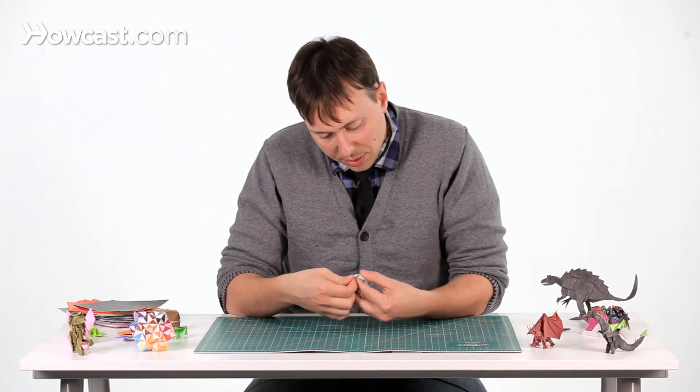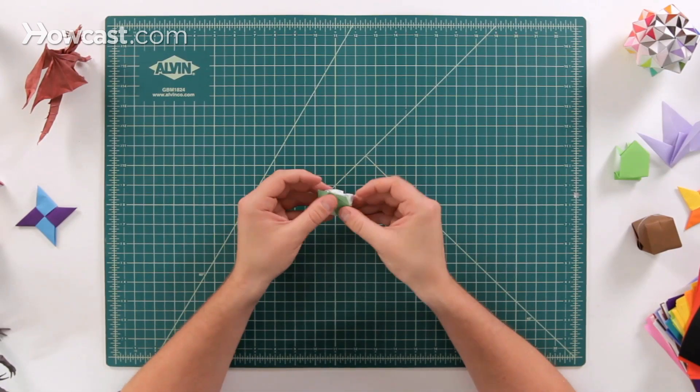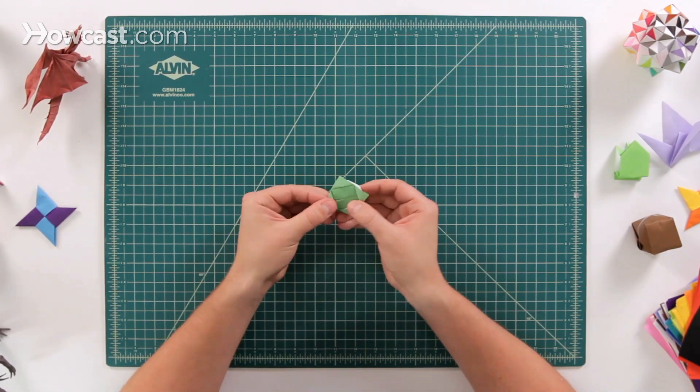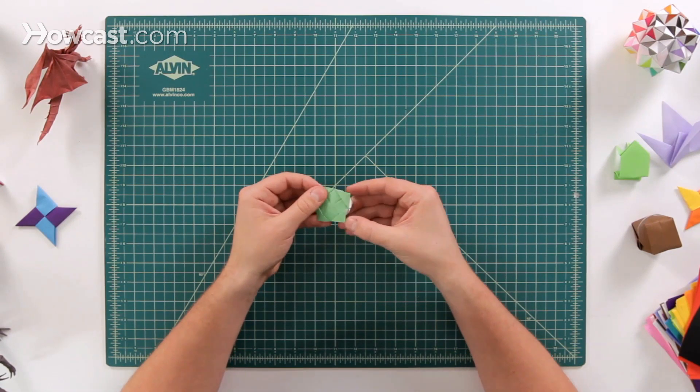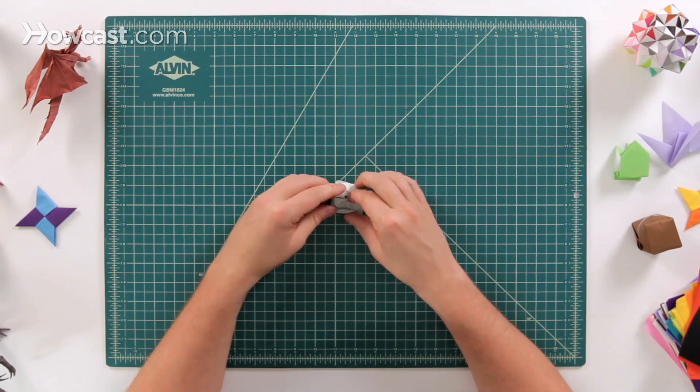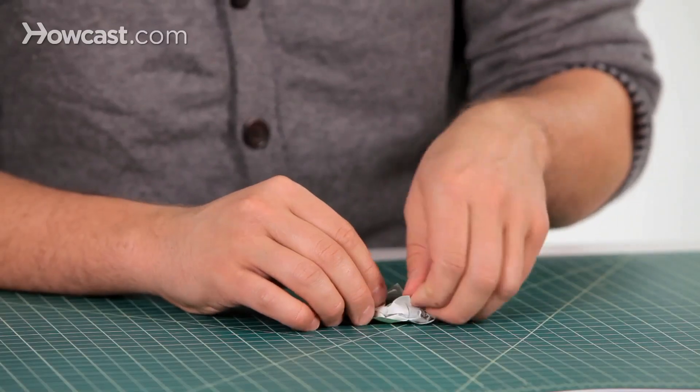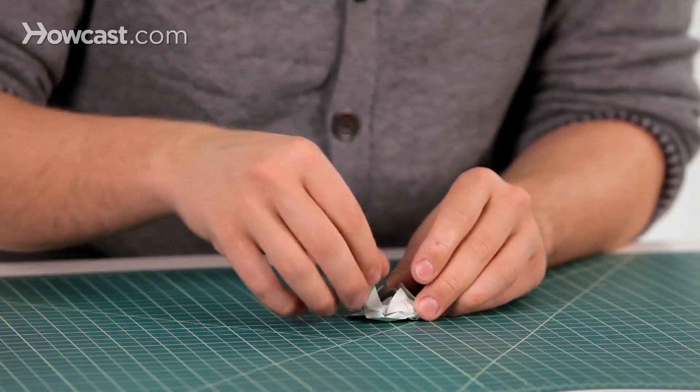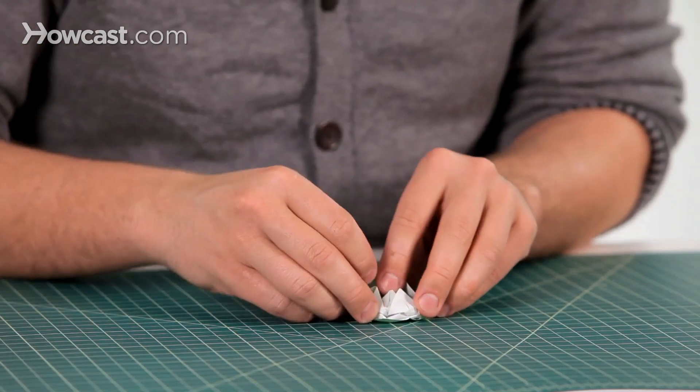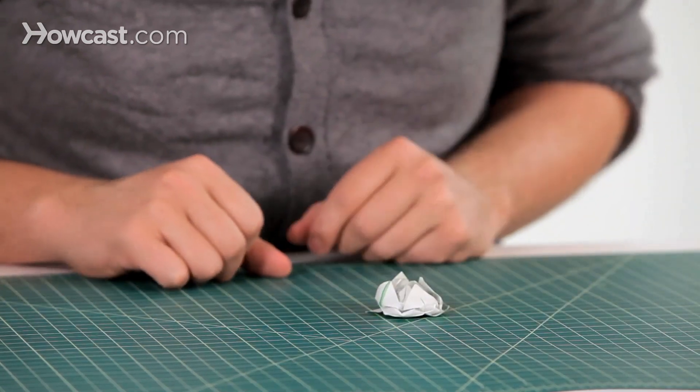Once again, wrap that around. And then the last step, go ahead and open this up on the bottom and that'll give you a little bit of some leaves on the bottom. And you flip it over. And these are all the petals so you can curl them as much as you want in any direction. But this is the origami lotus flower.